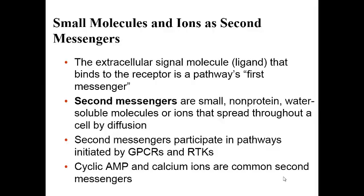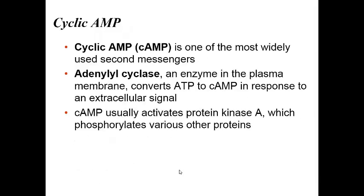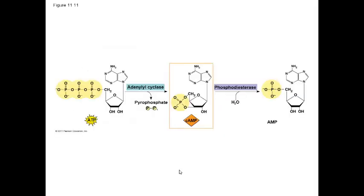Sometimes there are messengers within the cell that are not proteins. Any molecule used to transmit the message within the cell that's not a protein is called a second messenger. Examples of second messengers include cyclic AMP, calcium, IP3, and DAG. Cyclic AMP is the most widely used second messenger in our body cells. It's created using an enzyme called adenylyl cyclase, which takes ATP and cuts off two phosphate groups to create cyclic AMP, or adenosine monophosphate.